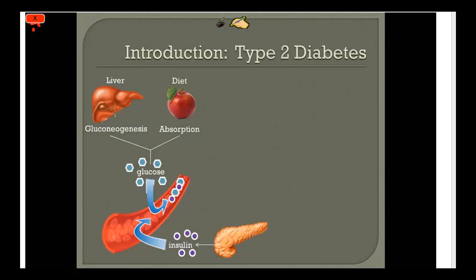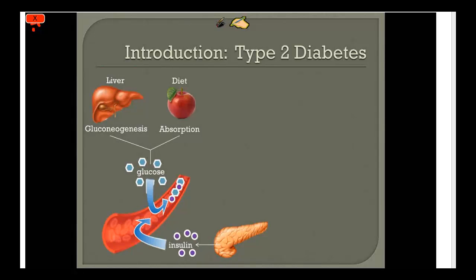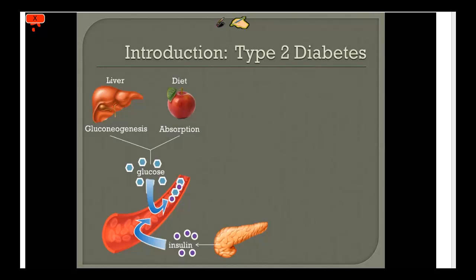Sources of blood glucose come from the liver via gluconeogenesis — the liver can produce glucose on its own — and to a lesser extent the kidney. But the major portion comes from the diet. Carbohydrate that we eat gets absorbed through the GI tract and enters the bloodstream. In response, the beta cells pick up that glucose and secrete insulin. We classically explain this to patients as a lock and key mechanism — insulin is the key that opens the door for glucose to enter the cell.